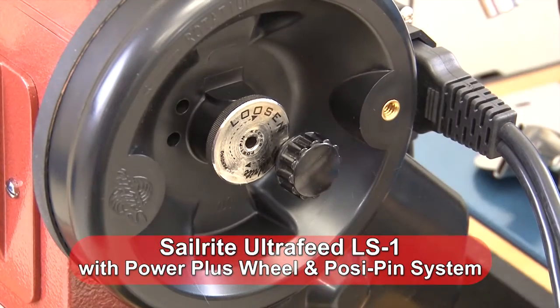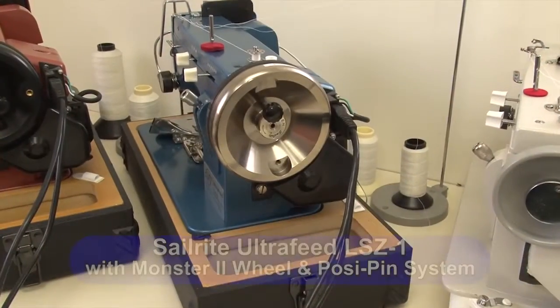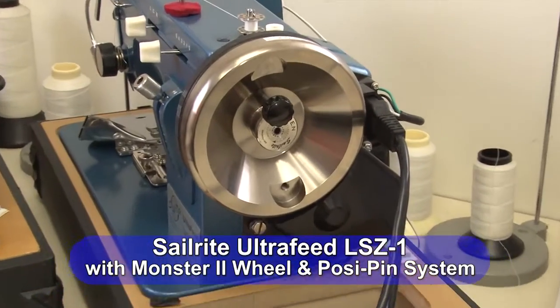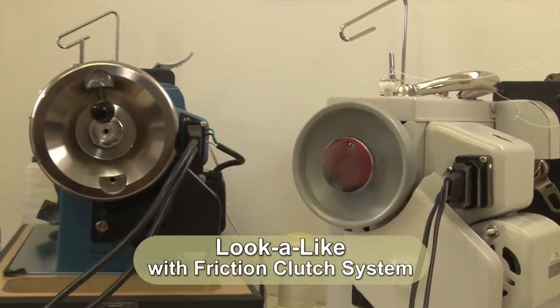This is the Ultrafeed LS1 sewing machine with the posi-pin with the standard balance wheel. And here's an LSZ sewing machine with the optional Monster 2 balance wheel with the posi-pin. Now this is a look-alike sewing machine with the friction clutch knob, not nearly as nice.